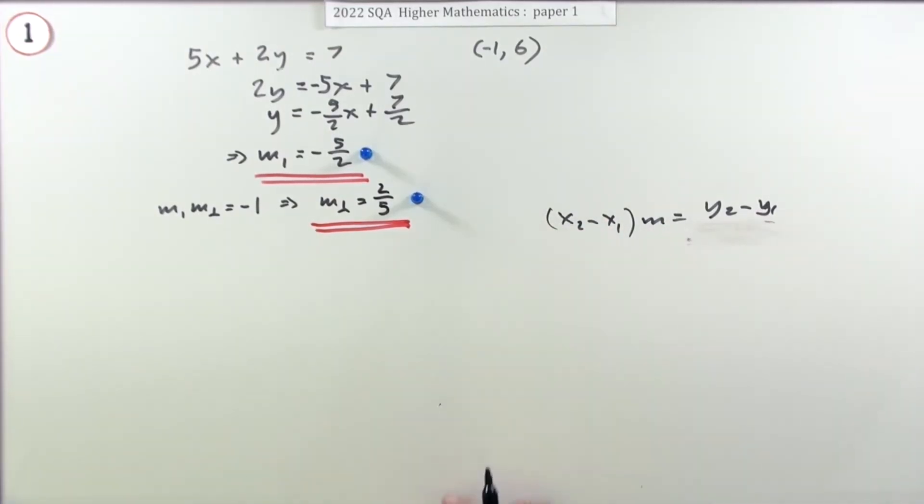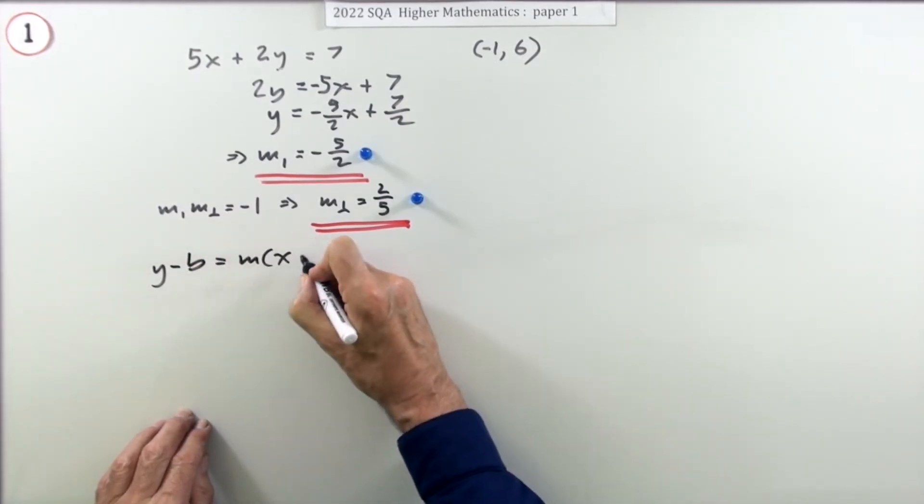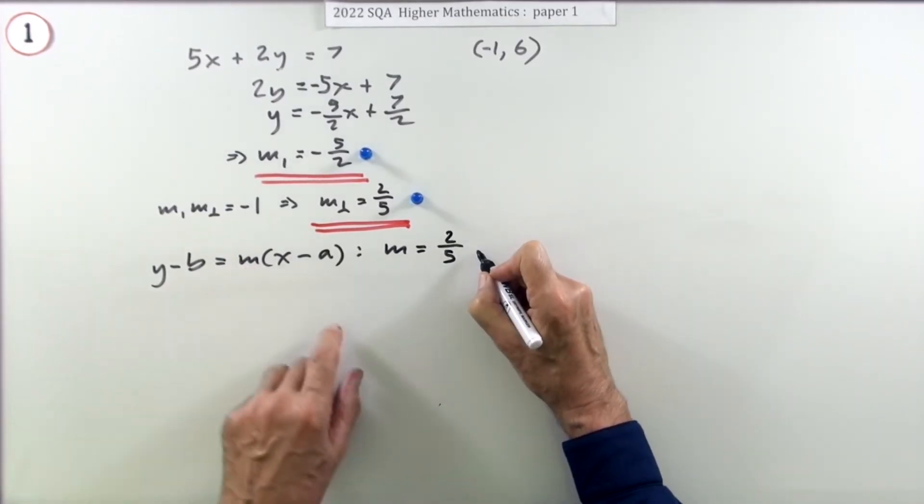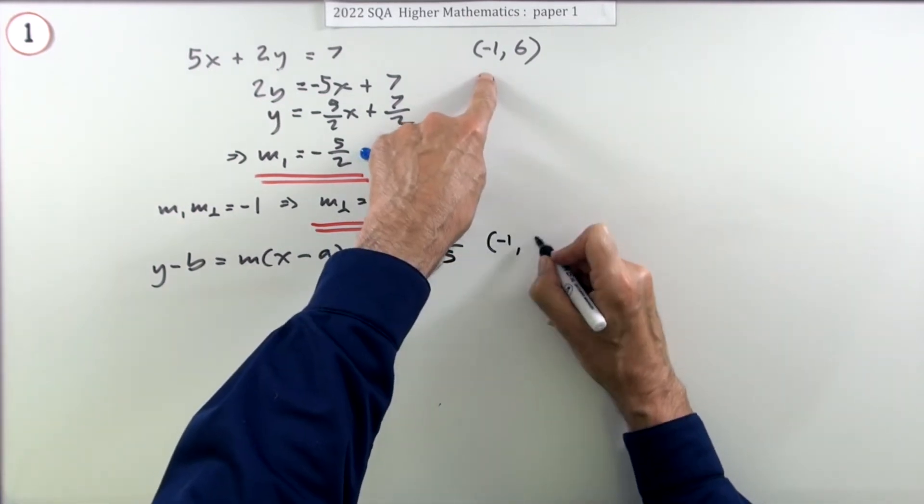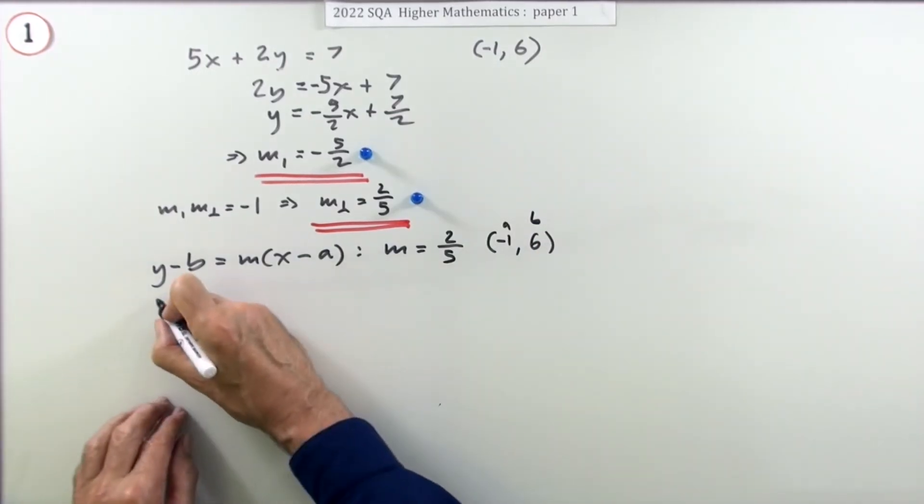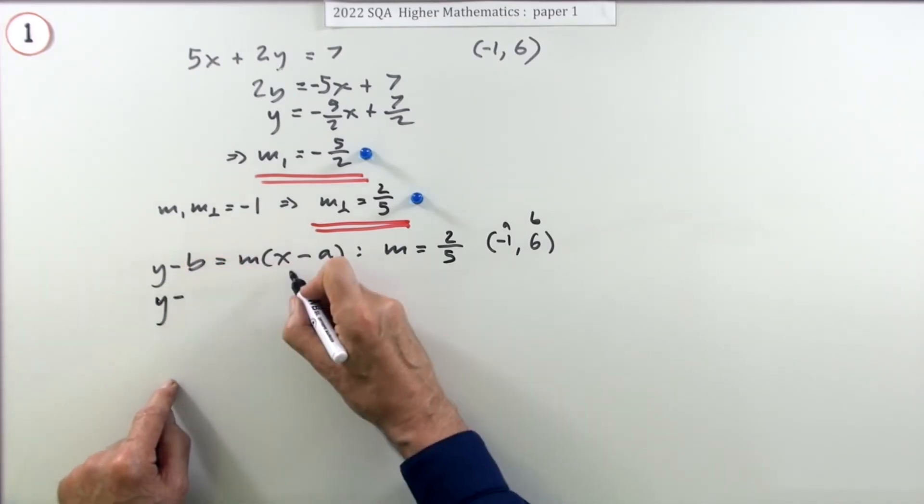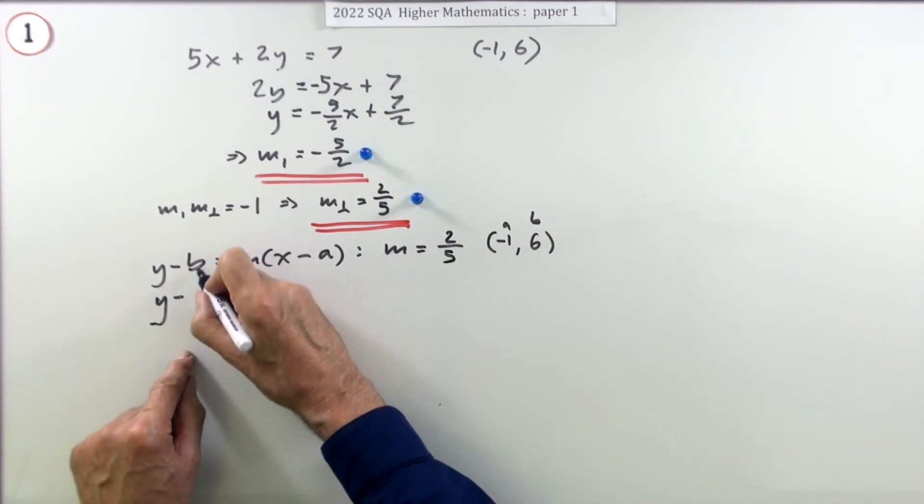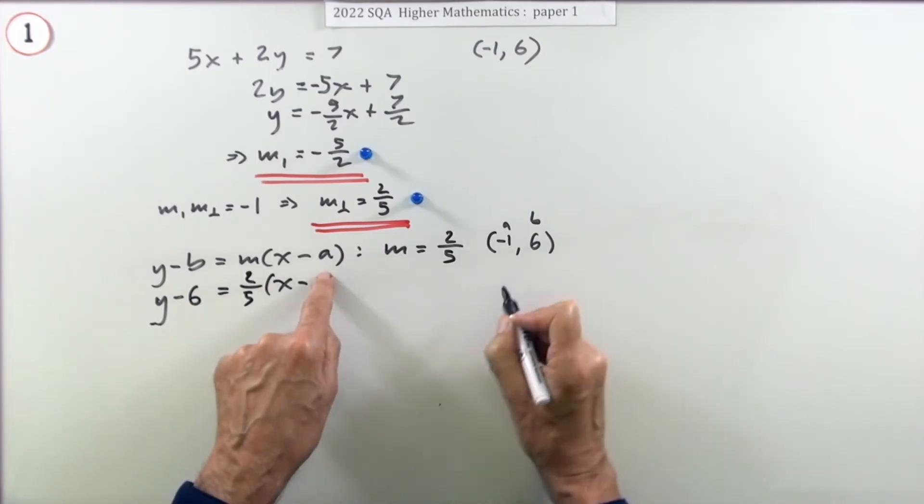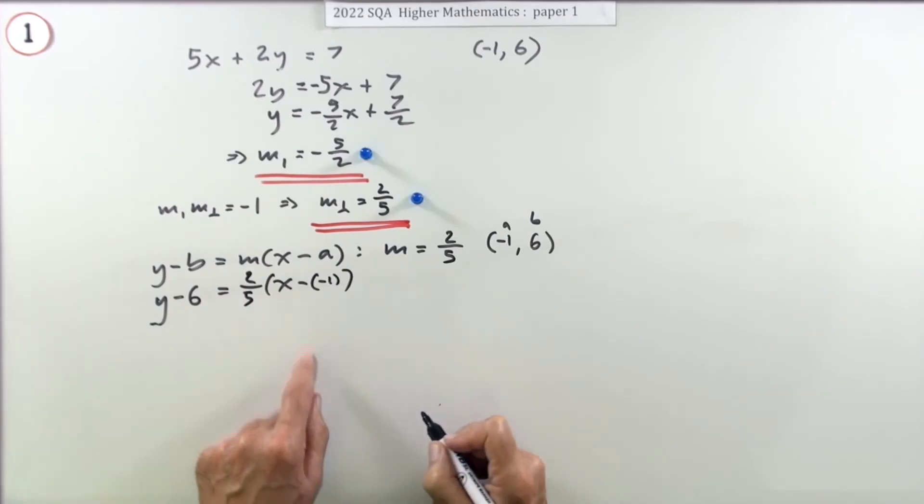Y minus b is m(x minus a), and I'll just restate what these are. M is two fifths, and the a and the b come from the point that you've got: (-1, 6), the x being the a and the 6 being the b. Feed it in: y minus - and you shouldn't really get them wrong because it's y minus the y coordinate, x minus the x coordinate - like the gradient. Y minus the six is the gradient, two fifths, of x minus the x coordinate, that's the a, negative one. Keep that safely in a wee bracket there so you don't get your signs confused.